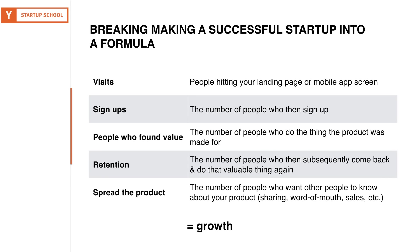Here's the growth formula from first principles. There are people that visit a page or app; people that sign up; of those, how many did something valuable — watching a video, making a recipe, taking a scooter ride; how many of those come back some period of time later; and how many will spread the product — tell a friend, share it, or maybe you have a sales team. These five things basically equal growth. These are your levers.